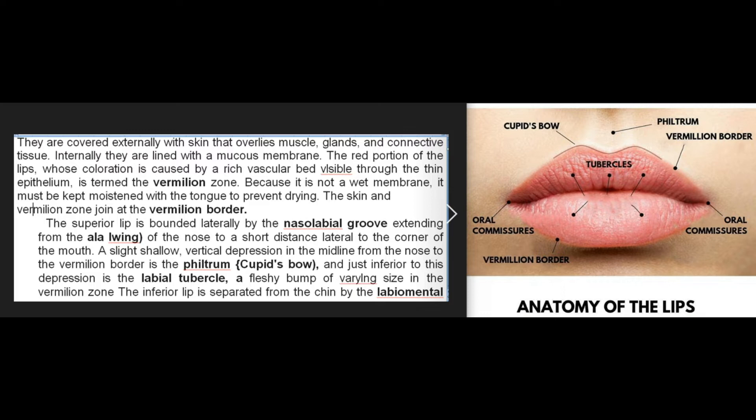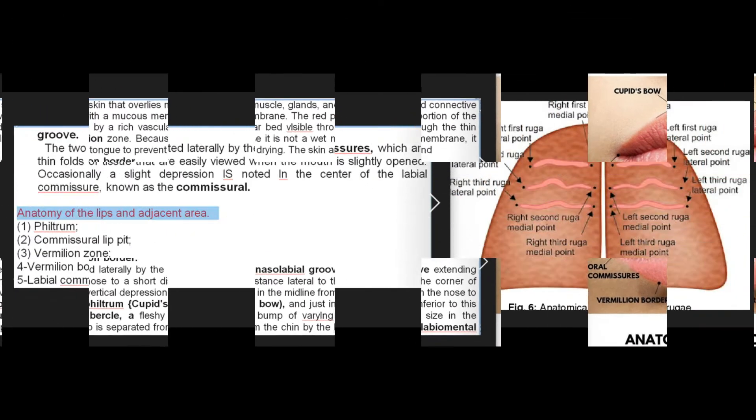The superior lip is bounded laterally by the nasolabial groove extending from the ala (wing) of the nose to a short distance lateral to the corner of the mouth. A slight shallow vertical depression in the midline from the nose to the vermilion border is the philtrum (Cupid's bow), and just inferior to this depression is the labial tubercle, a fleshy bump of varying size in the vermilion zone.